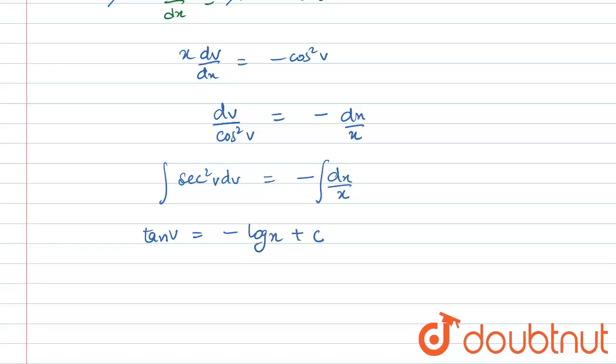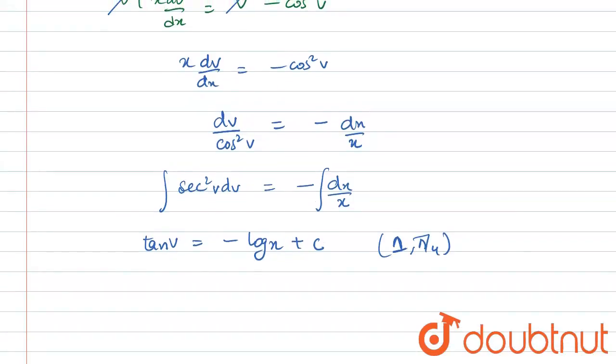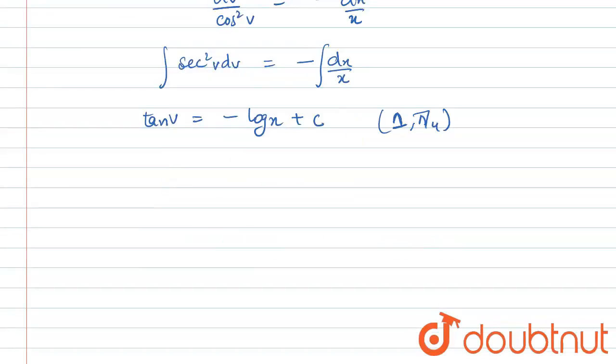To find the arbitrary constant, we use that this curve passes through (1, π/4). Substitute y = π/4 and x = 1. First, replace v with y/x, so tan(y/x) = -log x + c.